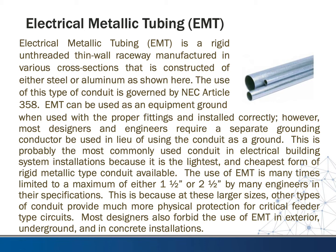Electrical metallic tubing, or EMT, is a rigid, unthreaded, thin-wall raceway manufactured in various cross sections, constructed of either steel or aluminum. Its use is governed by NEC Article 358. EMT can be used as an equipment ground with proper fittings and correct installation; however, most designers and engineers require a separate grounding conductor instead. This is probably the most commonly used conduit in electrical building system installations because it is the lightest and cheapest form of rigid metallic conduit available. Its use is often limited to a maximum of one-and-a-half or two-and-a-half inch by many engineers, since larger sizes of other conduit types provide much more physical protection for critical feeder circuits. Most designers also forbid the use of EMT in exterior, underground, and in-concrete installations.